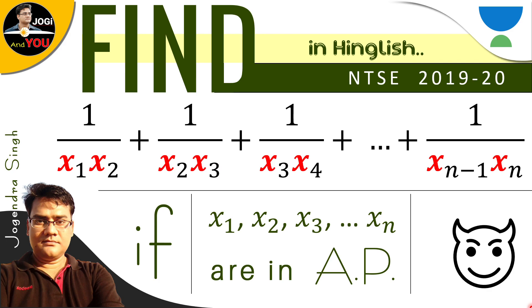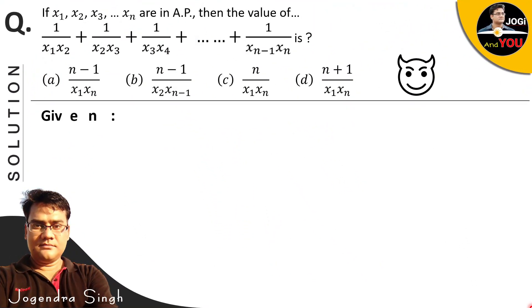So let's solve this. Here is the full question. The language is: If x₁, x₂, x₃ till xₙ are in AP, then the value of this expression is - options given are A, B, C and D. Which one is our answer? This is an MCQ, but even though it's MCQ, solving this is tricky and somewhat tough.